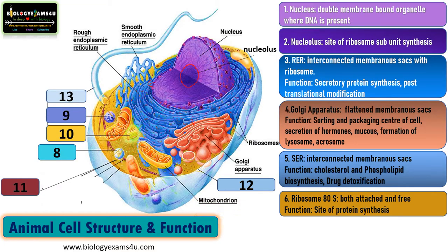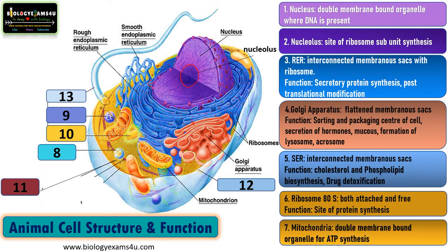The next structure is mitochondria. Mitochondria is a double membrane-bound structure involved in ATP synthesis or energy production through cellular respiration. The inner membrane is the site of ATP synthesis and the electron transport chain, whereas the matrix is also the site of beta oxidation. It is called the powerhouse of the cell.